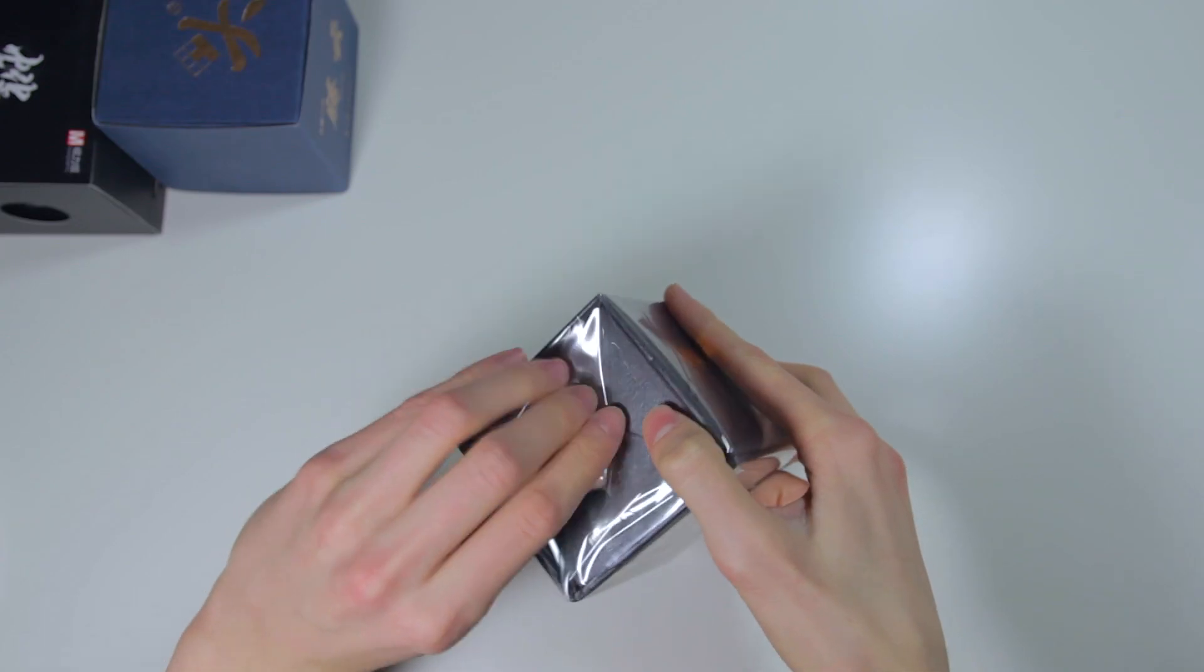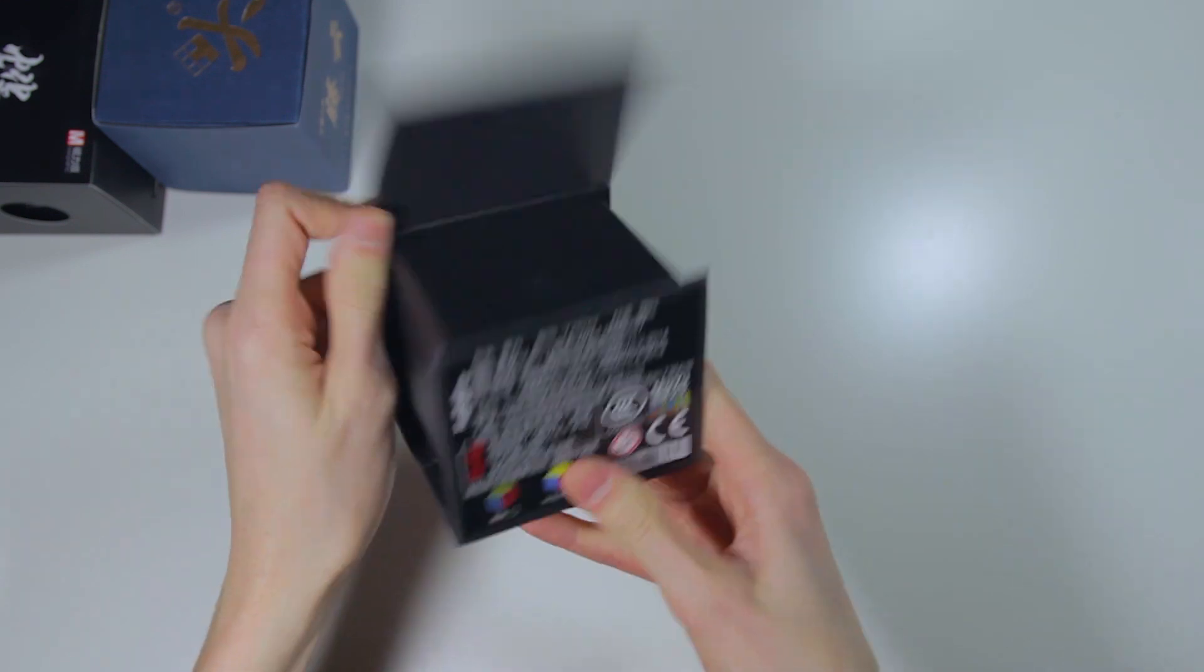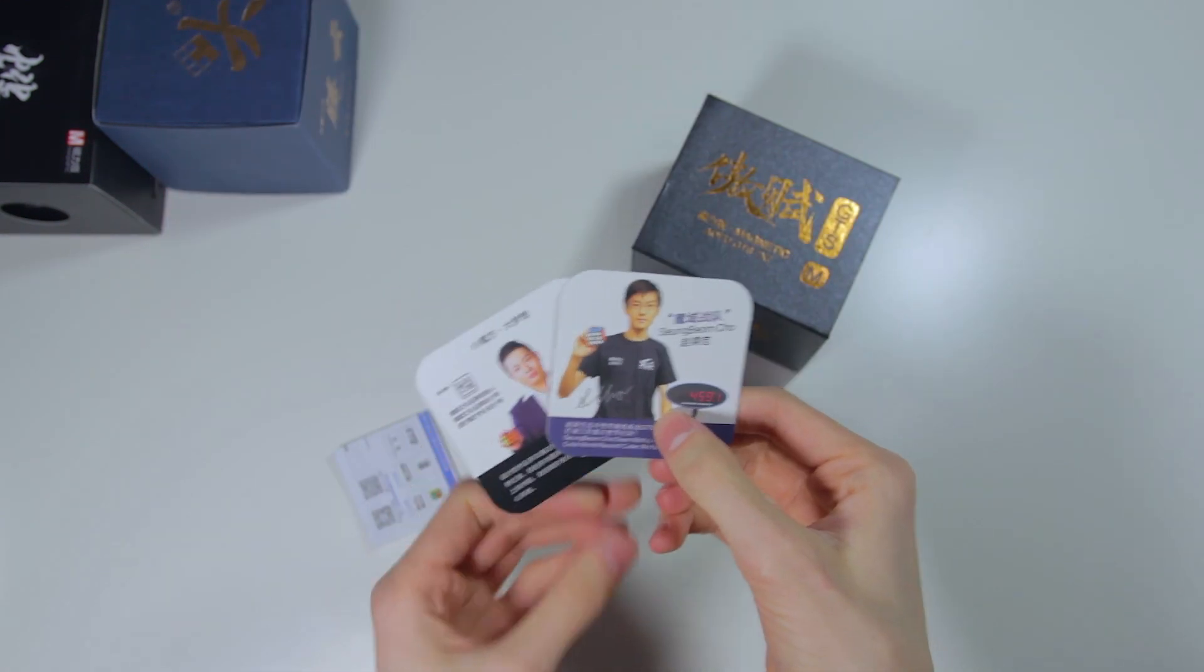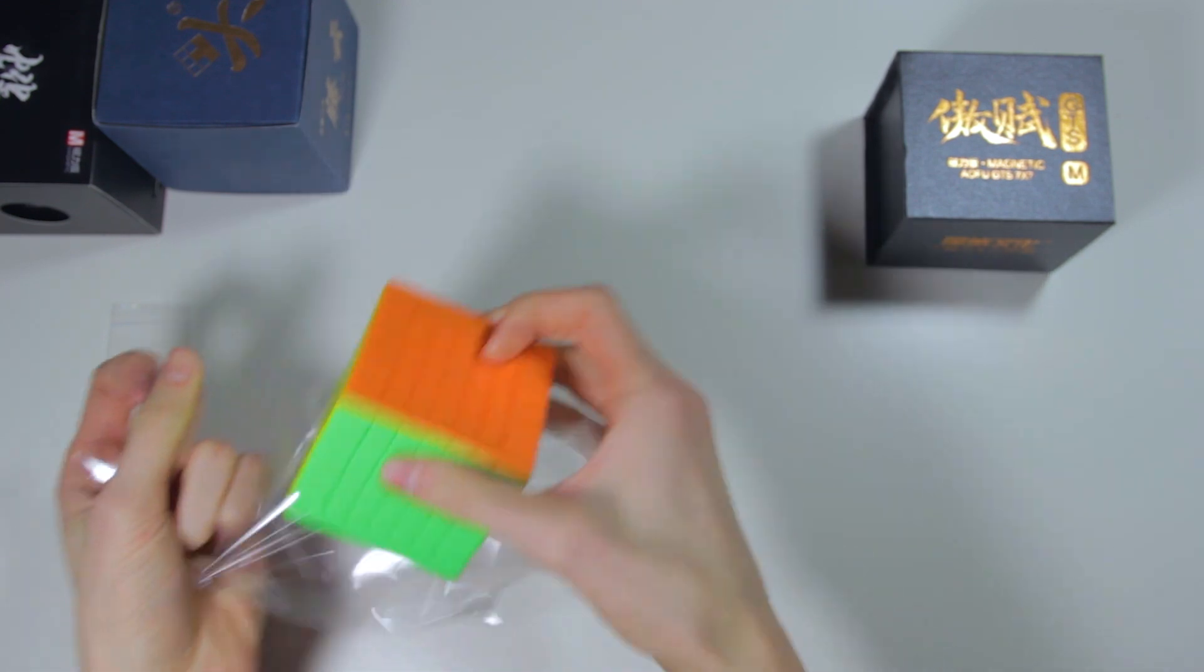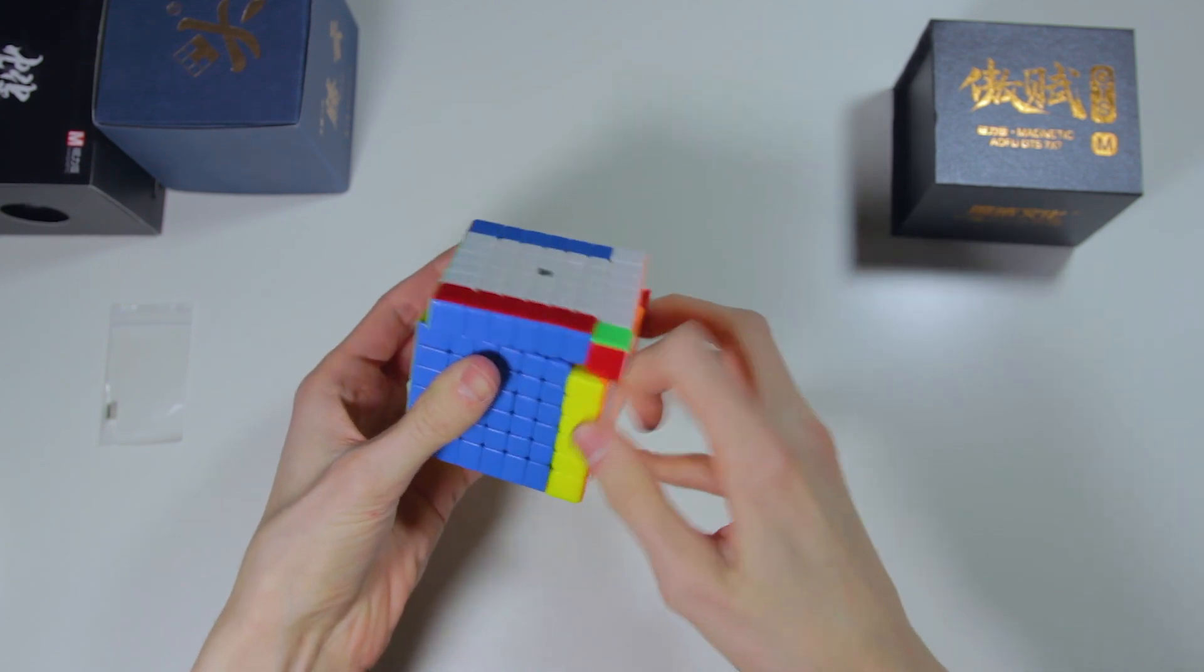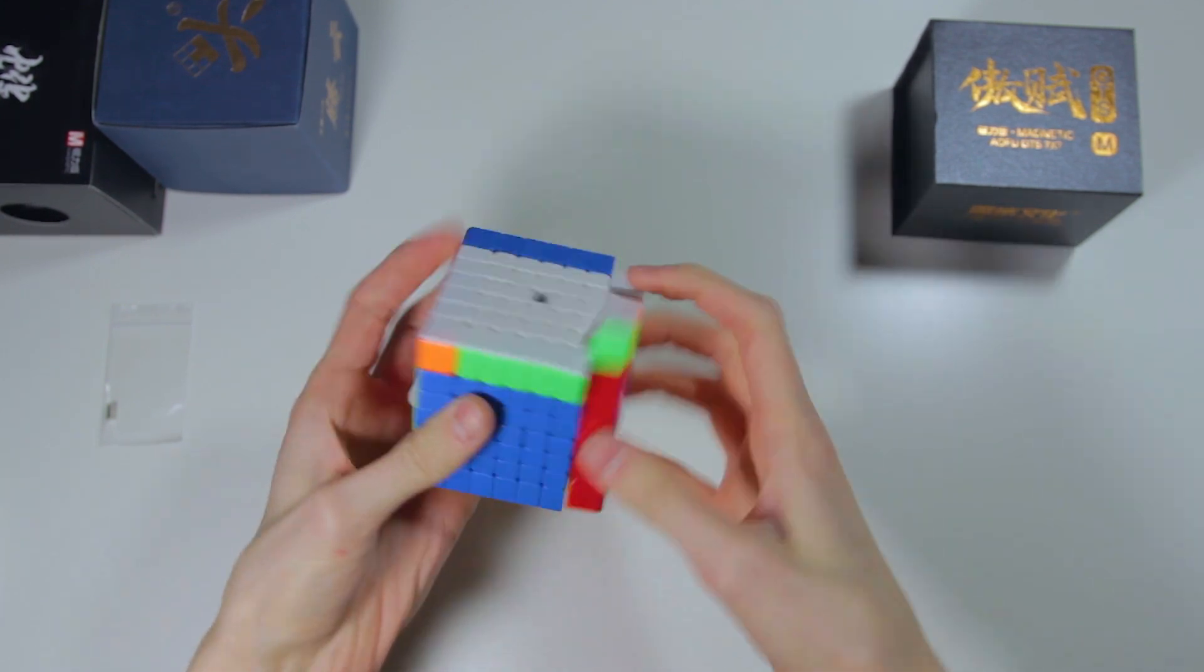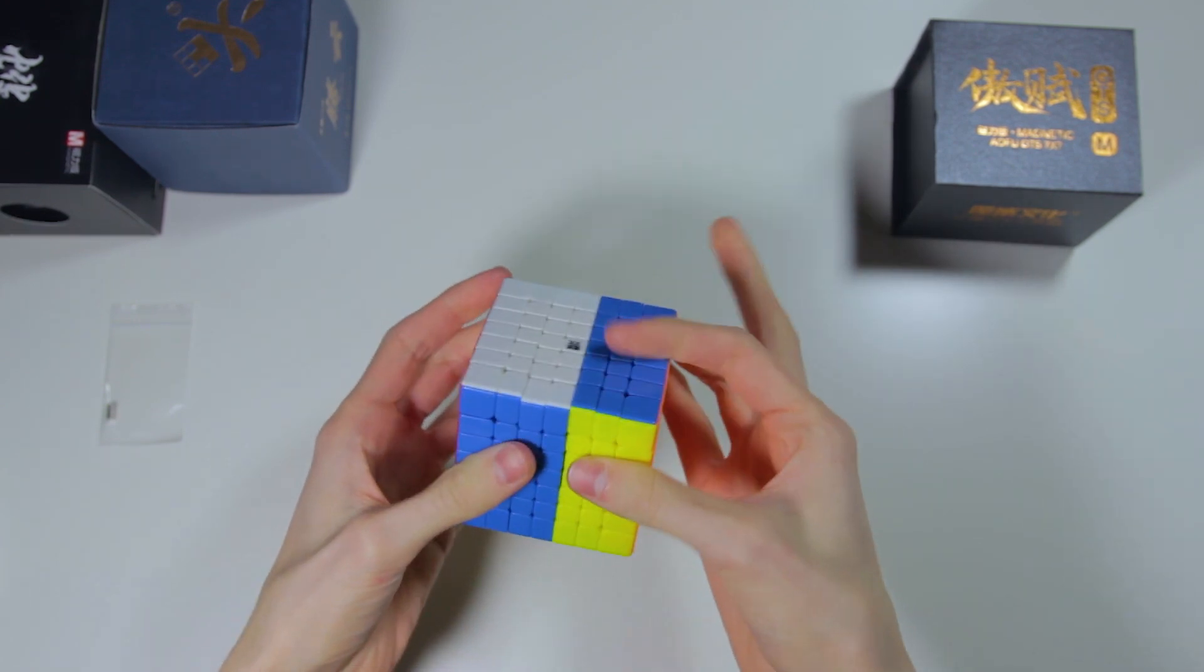So first, let's take a look at the Moyu Aofu GTS-M. This cube has a pretty nice magnetic box with a few cards inside, but let's just get straight onto the cube. Just holding it in my hands, it seems to feel a little bit larger than most 7x7s. I'm not actually sure what the dimensions are in comparison to most 7x7s, but I would expect that this cube would be at least one or two millimeters larger.